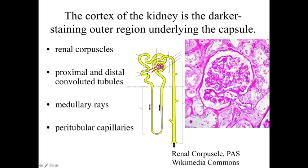We're also going to have capillaries found around the proximal convoluted tubules, and these are going to be the peritubular capillaries. The cortex is going to be from this dashed line on the representation upward, and so we've got a lot of structures going on here.